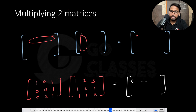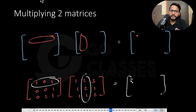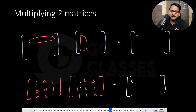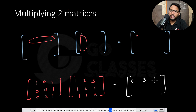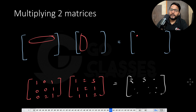Then we will multiply this row with this column to get the second element, which means it will be 2 plus 1, which is 3. So that's how we keep on writing all the elements. This is how we multiply two matrices.